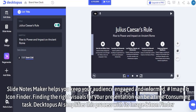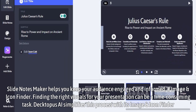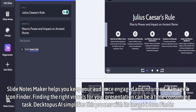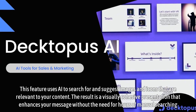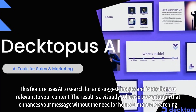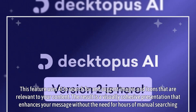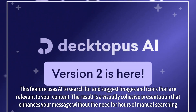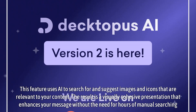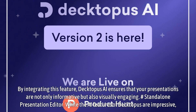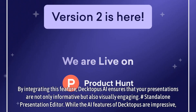Image Icon Finder: Finding the right visuals for your presentation can be a time-consuming task. Dectopus AI simplifies this process with its Image Icon Finder. This feature uses AI to search for and suggest images and icons that are relevant to your content. The result is a visually cohesive presentation that enhances your message without the need for hours of manual searching. By integrating this feature, Dectopus AI ensures that your presentations are not only informative but also visually engaging.